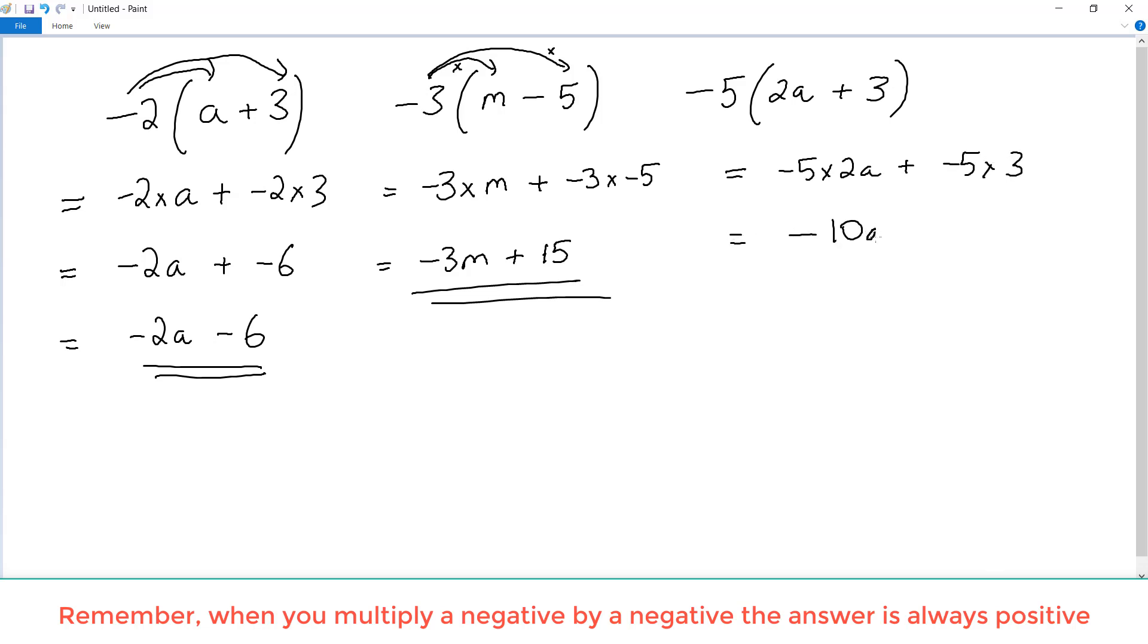negative 5 times 2 is negative 10a, plus negative 5 times 3 is negative 15. So we rewrite that without the plus, and this is our answer.